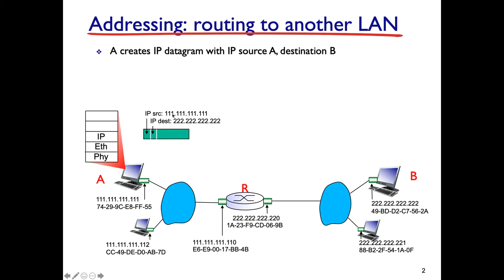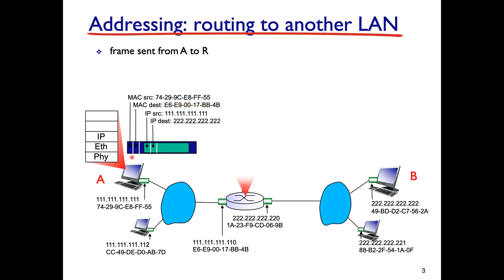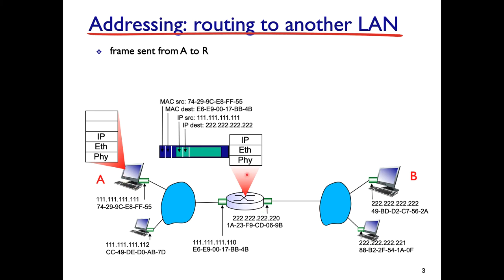The source IP address is A's IP address and the destination IP address is B's. When this IP packet goes down to the Ethernet layer, the source MAC address is A's MAC address and the destination MAC address is R's MAC address — not B's. The Ethernet frame is then ready to be transmitted through the subnet to the router.